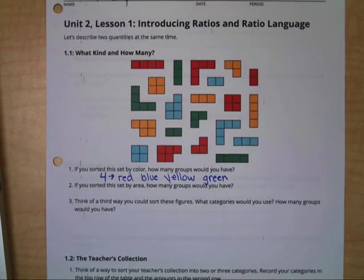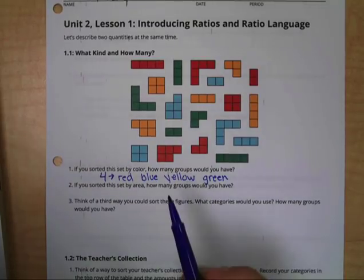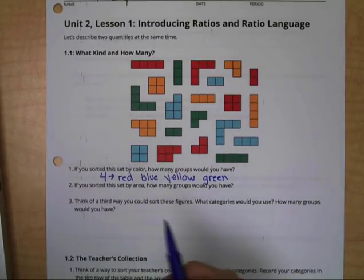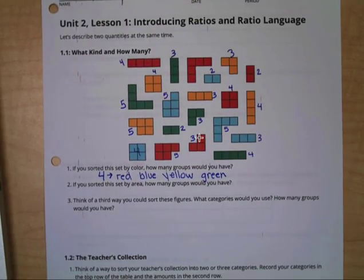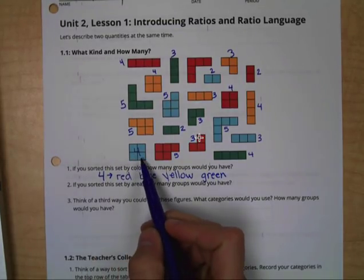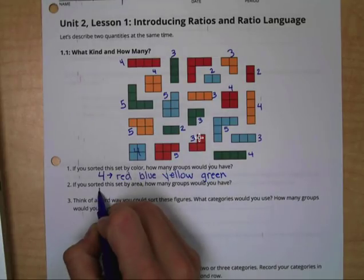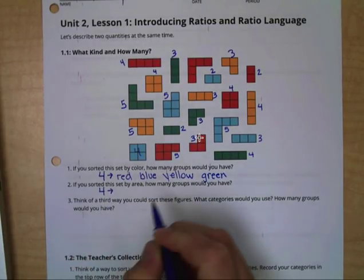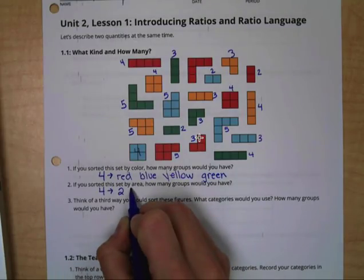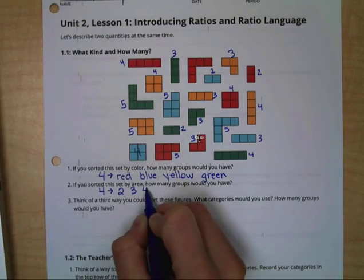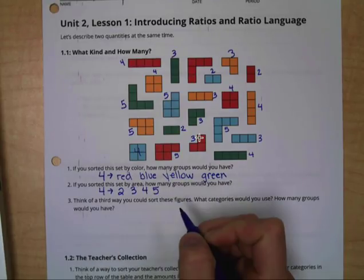Now they would like us to sort them by area, and they want to know how many groups you would have. So go through and find the area of each of the shapes. You can pause the video, and then come back when you're ready. Okay, you should have found the area of all of your shapes by now. And if we were to divide them into groups according to their area, we would have four different groups. We would have a group that has an area of two, a group that has area of three, a group that has area of four, and a group that has the area of five.